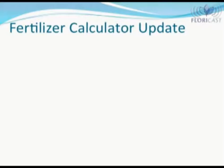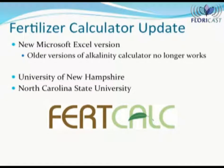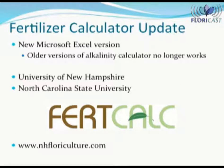In the past, growers have been able to download a Microsoft Excel spreadsheet that allows them to determine the correct amount of fertilizer to mix into water to get the appropriate concentration when using a proportioner. That calculator no longer works due to changes in the newest versions of Microsoft Excel. A new version, called FertCalc, has been developed by the University of New Hampshire and North Carolina State University. This new version is now web-based and does not require any downloading. The calculator can be accessed through the UNH website, www.nhfloriculture.com.